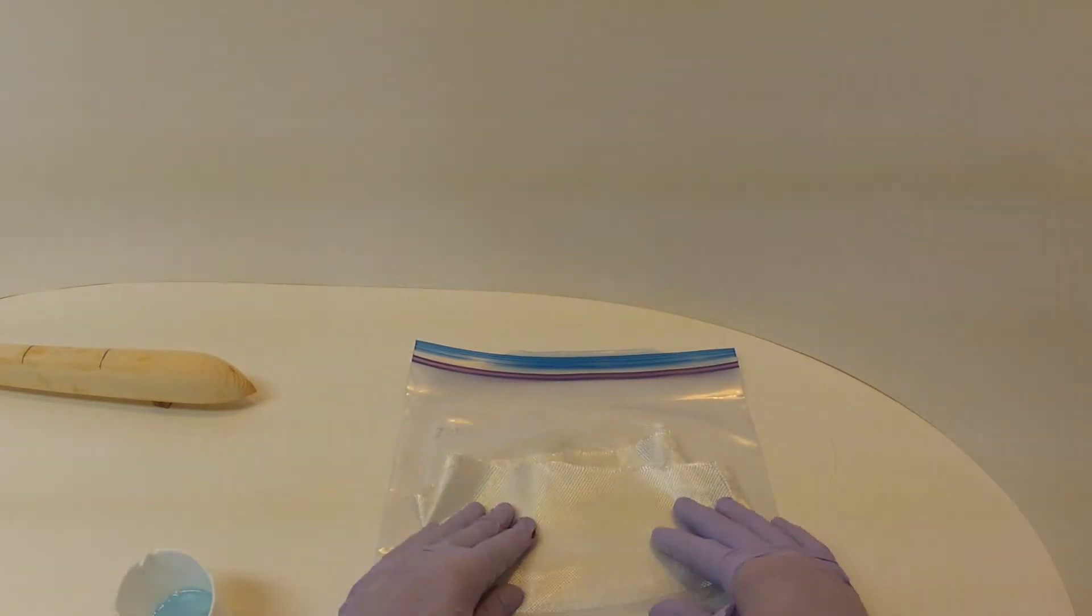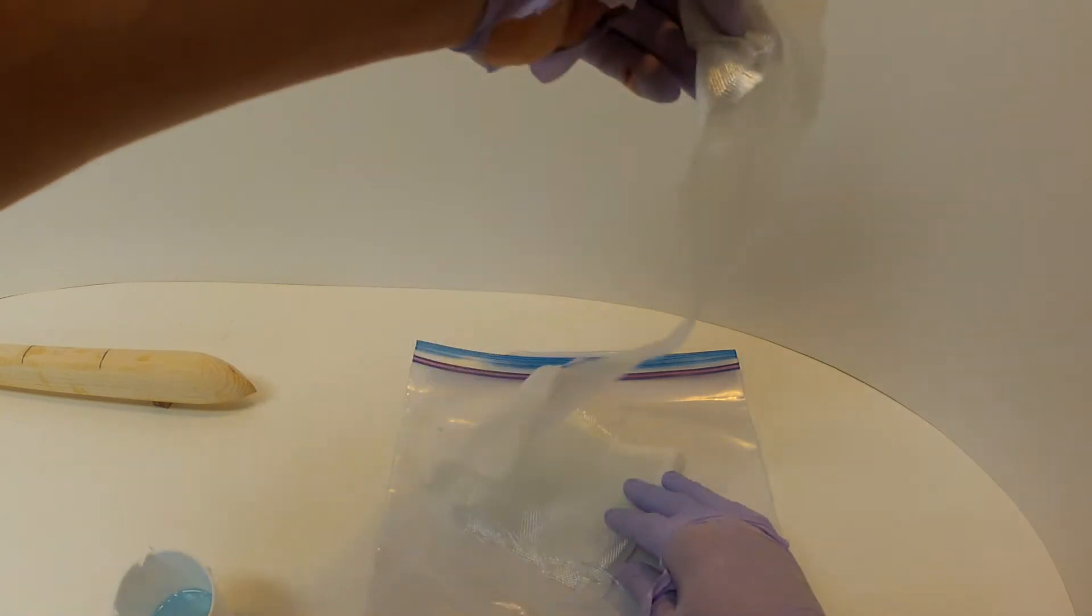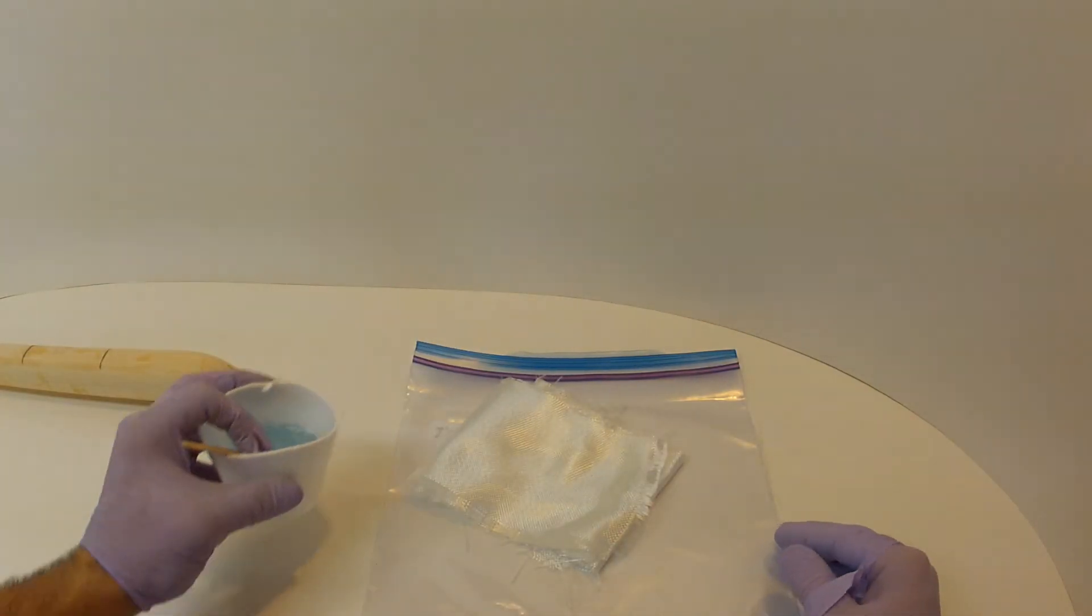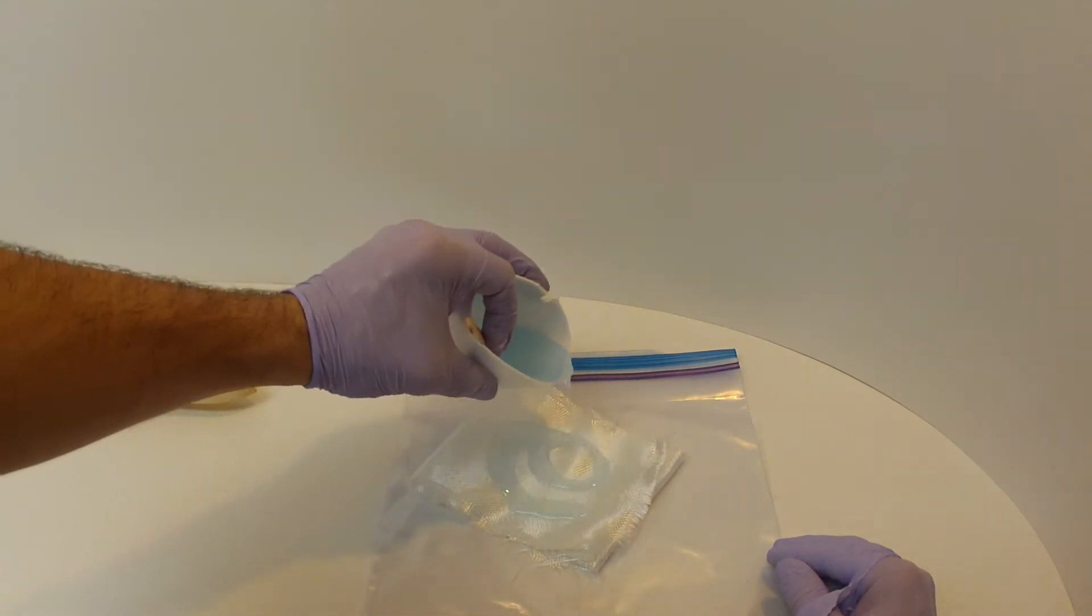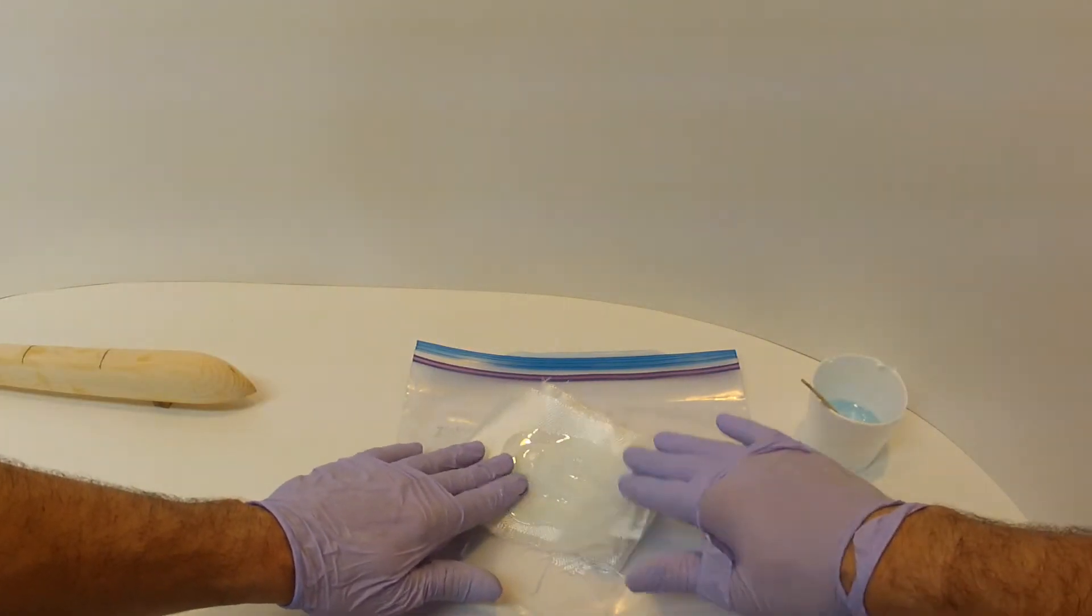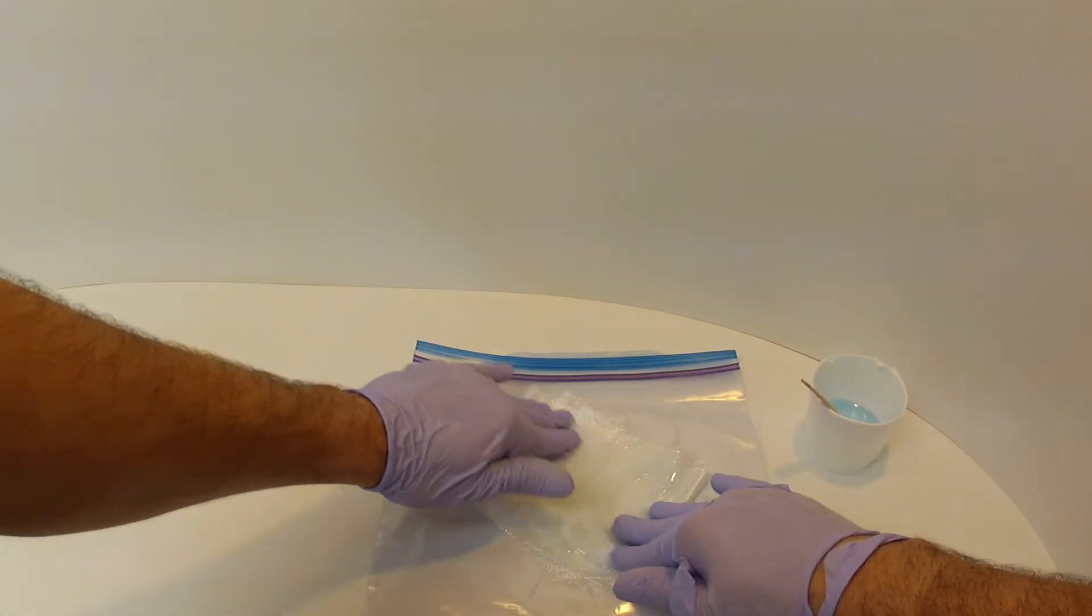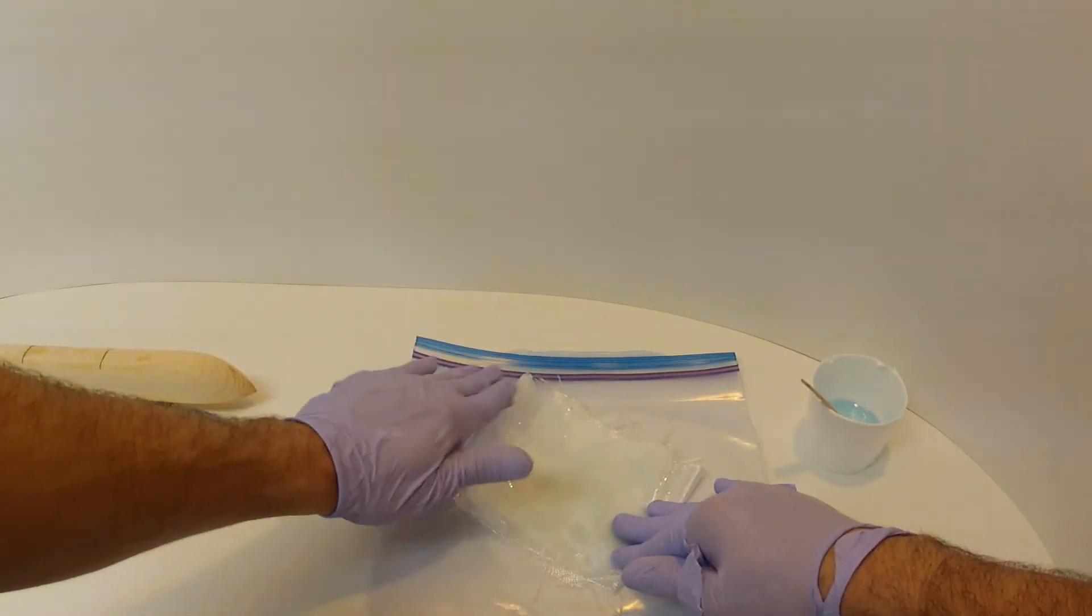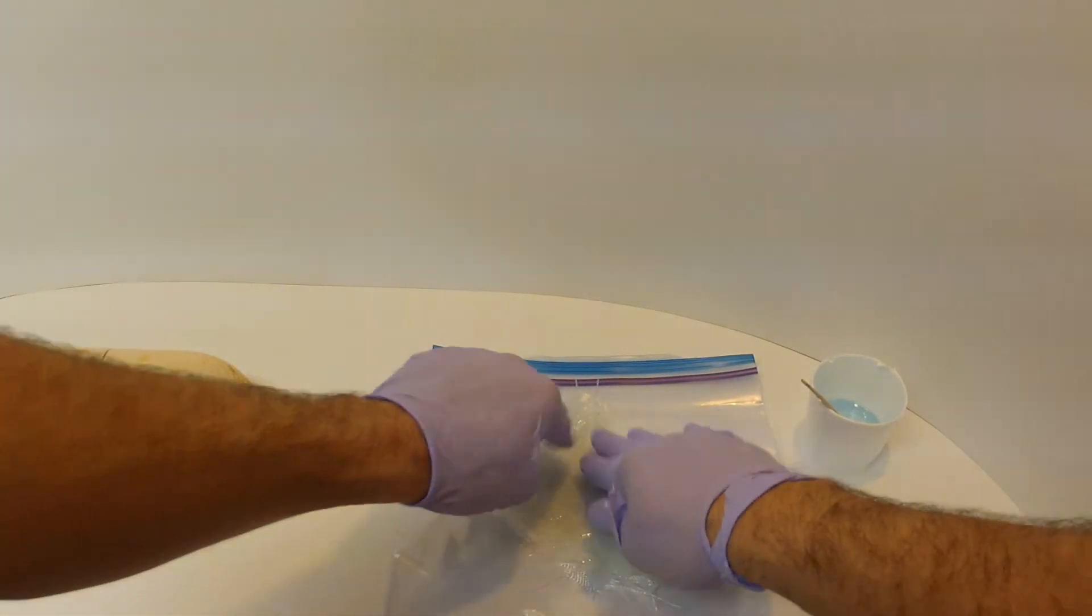When glassing the top side of the fuselage, it's easiest to get your strips and just pile them up and then soak them through prior to placing them on the fuselage. Because it's a curved surface, it's actually pretty hard to glass it like we did the underside where you just put the glass on and pour it through directly on the part.